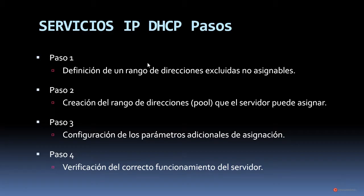Esas direcciones no van a ser asignadas por el servidor DHCP. Realmente constituyen un rango que ya hemos asignado a dispositivos o que queremos conservar para asignar a dispositivos en los que vamos a necesitar conocer su dirección IP. Por ejemplo, la vamos a asignar de forma estática en dispositivos relevantes como routers o servidores, ya que vamos a necesitar acceder a ellos a menudo o conocer su dirección para realizar procedimientos de administración.